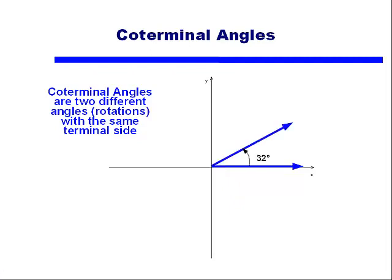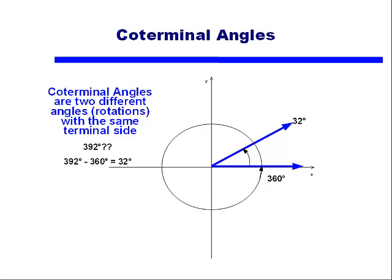Let's take an example: 32 degrees. It's positive 32 degrees, so we rotate counterclockwise. It's an acute angle, so we'd expect it to be in quadrant I. Now, what happens if we graph an angle of 392 degrees? We know there are 360 degrees in a circle, so if we take 360 degrees and subtract that from 392, we end up with 32 degrees. So graphing 32 degrees and graphing 392 degrees gives terminal sides that line up — they are coterminal angles.